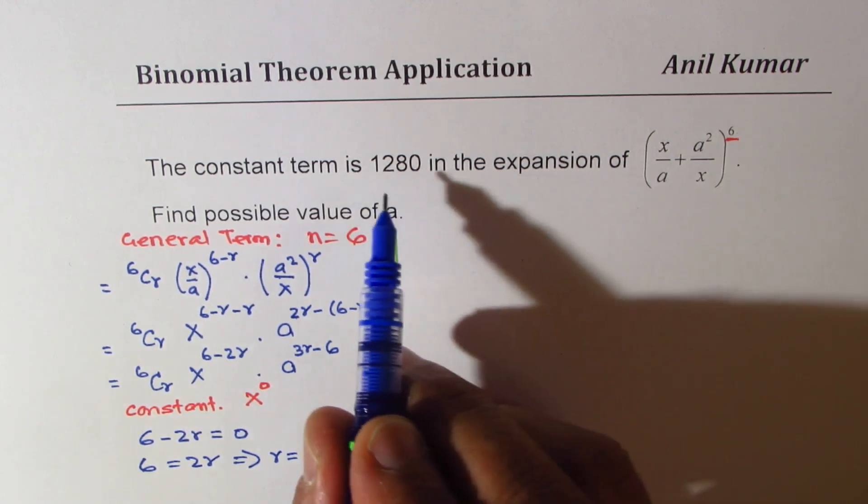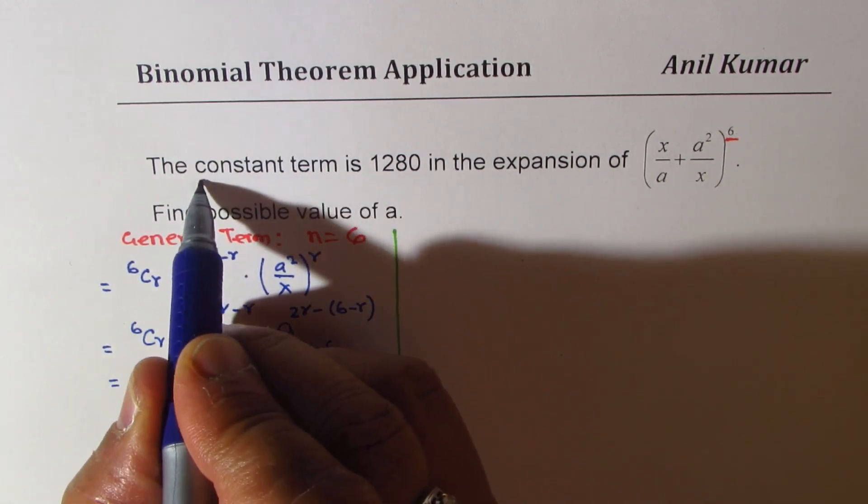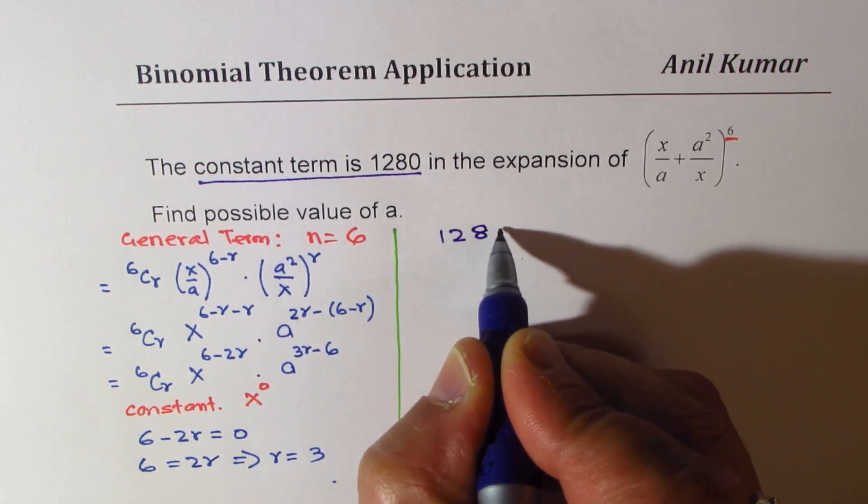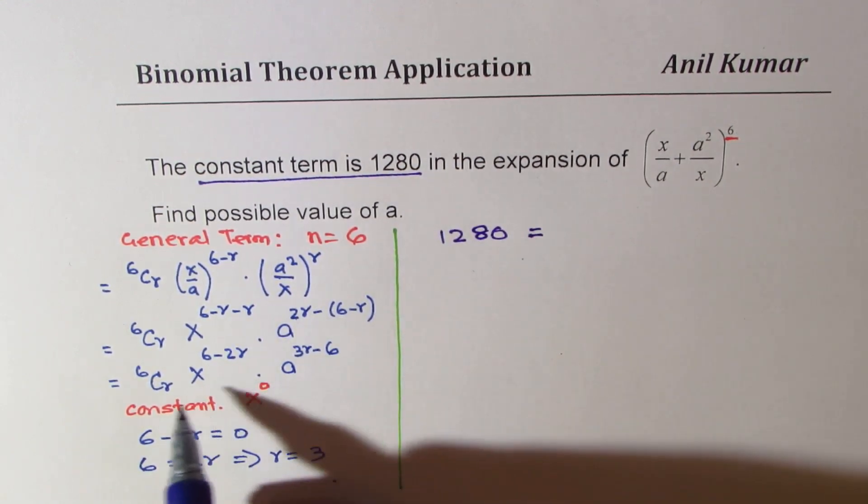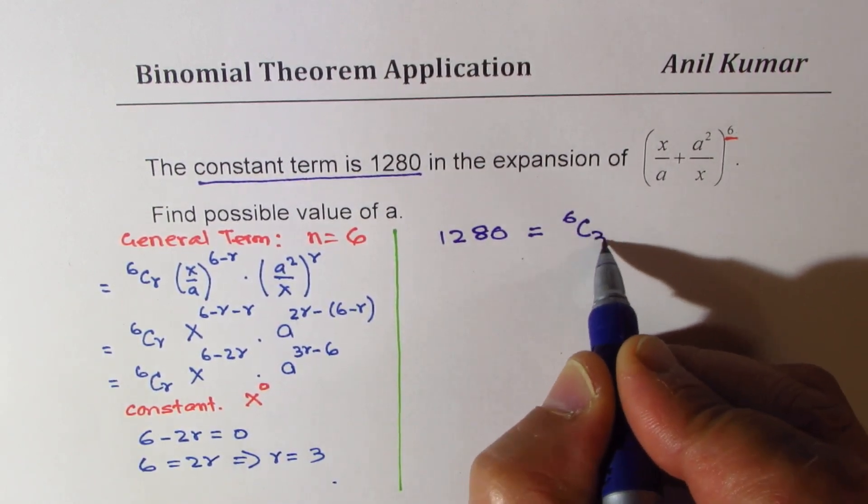So now, since we know the constant term is given to us as 1280, so we can write 1280 as equal to 6C3, since r is 3, 6C3, x we know will be 0 because we write 6 minus 2 times 3.